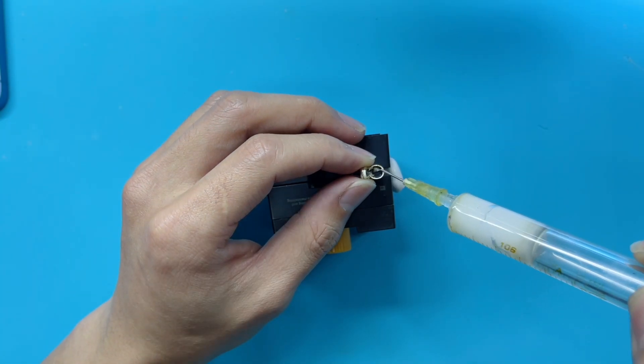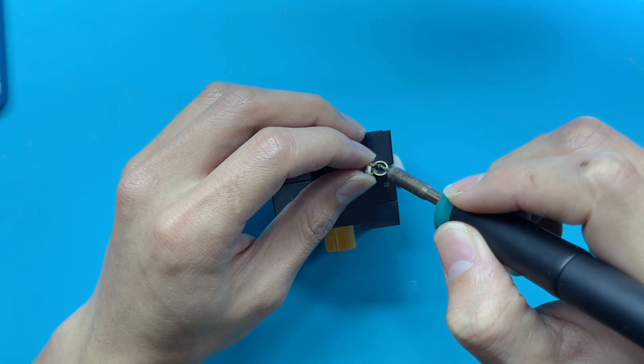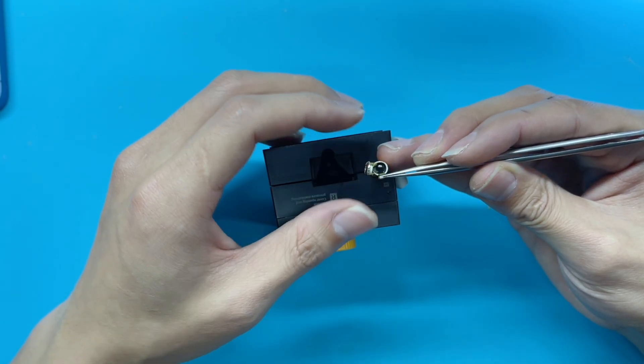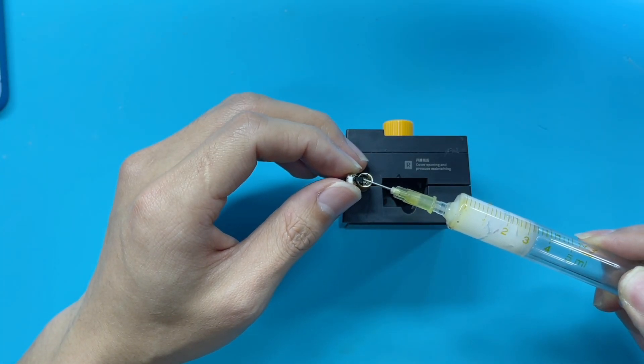Put some flux and use the soldering iron to disconnect the battery's negative. And do the same thing to disconnect the positive of the battery.